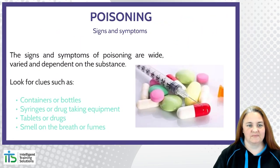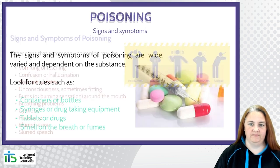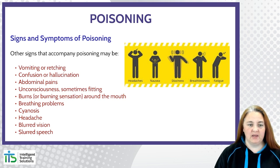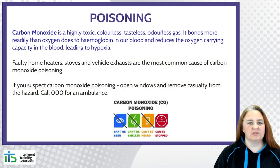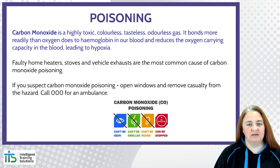The signs and symptoms of poisoning are wide, varied and dependent on the substance. Look for clues such as containers or bottles, syringes or drug-taking equipment, tablets or drugs, or the smell on the breath or fumes in the air. Other signs and symptoms include vomiting, confusion or hallucinations, abdominal pain, unconsciousness and sometimes seizures, burns around the mouth, breathing problems, cyanosis (blue or grey around the lips), headache, blurred vision and slurred speech. Carbon monoxide is a highly toxic, colourless, tasteless, odourless gas that bonds more readily than oxygen to the haemoglobin in our blood, reducing the oxygen-carrying capacity and leading to hypoxia. Faulty home heaters, stoves and vehicle exhausts are the most common causes. If you suspect carbon monoxide poisoning, open windows, remove the casualty from the hazard if possible, and call 000 for an ambulance.